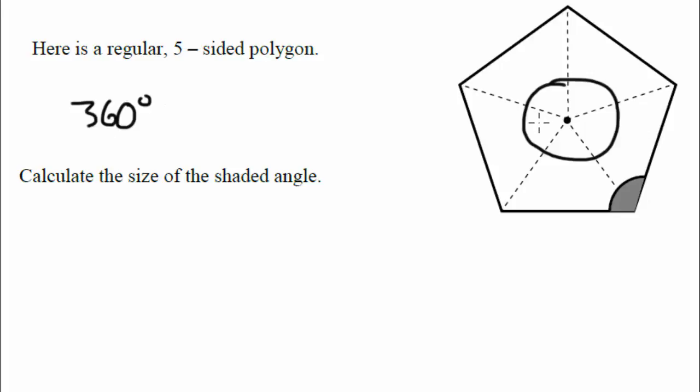Now remember there's 360 degrees in a circle. And this is made up of five triangles. So these are five identical triangles. Now there's 360 degrees here.